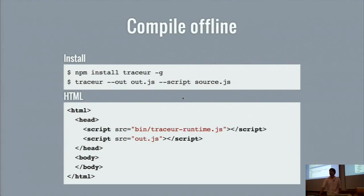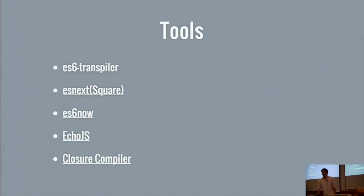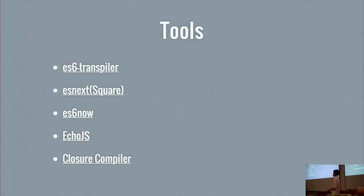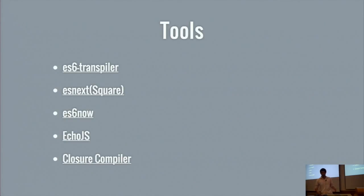There are many types of tools you can use to write ES6. Besides Traceur, there's the ES6 transpiler, ESNEXT — which is Square's project — and ES6Now. Also ClojureScript supports some ES6 features. You have a lot of choices, so you can try them.